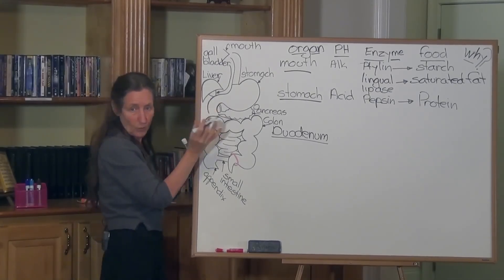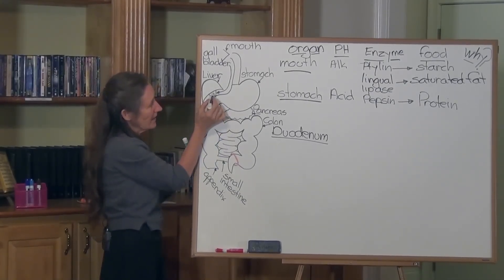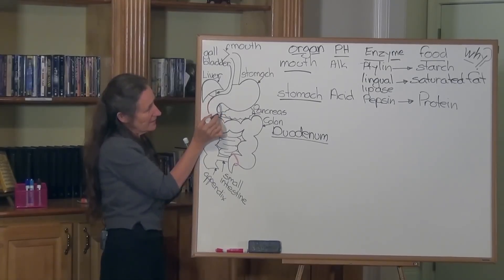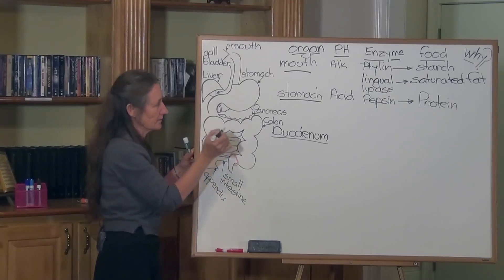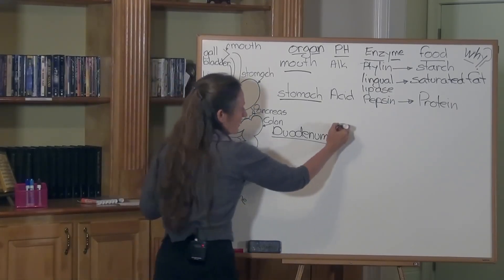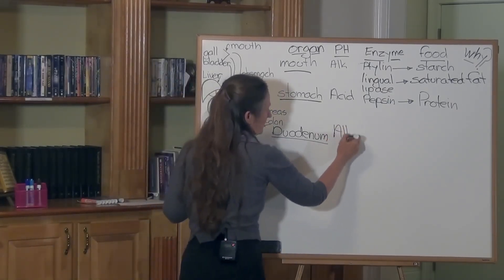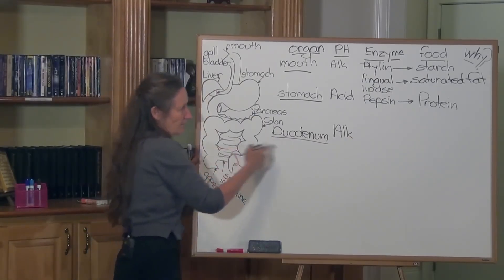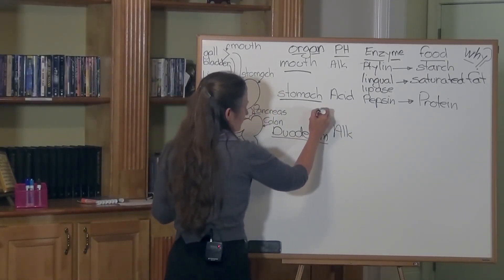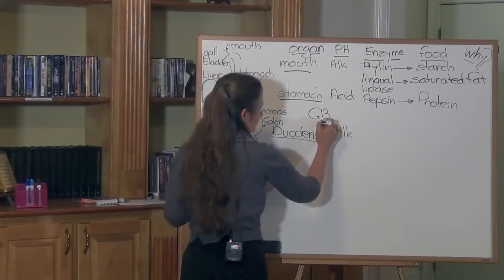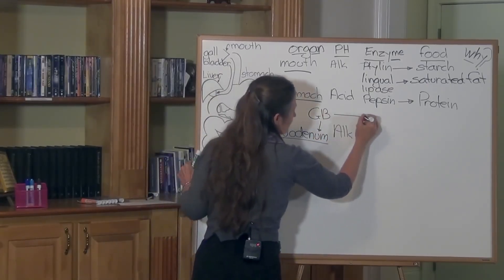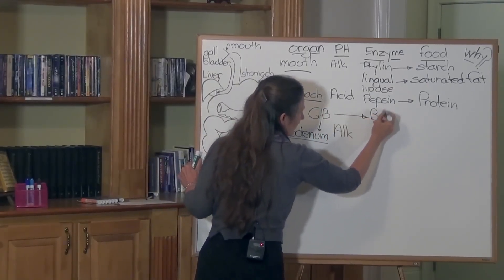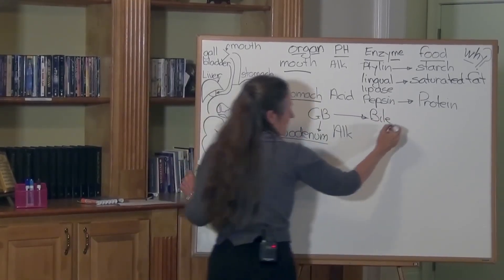The gallbladder is a reservoir for bile, and that bile duct comes down, connects with the neck of the pancreas, and empties into the duodenum. It's an alkaline environment in the duodenum, and the enzyme that is released from your gallbladder is bile.